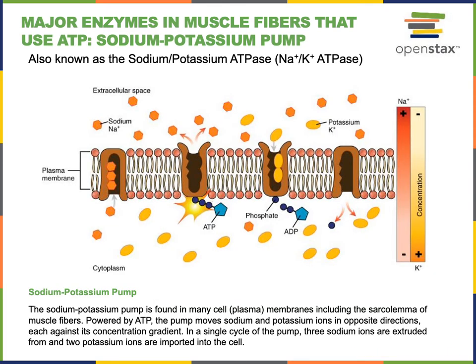The sodium-potassium pump is another enzyme that uses a large amount of ATP in muscle fibers. The sodium-potassium pump performs hydrolysis of ATP and uses the energy released to force sodium out of the cytosol and potassium into the cytosol, creating the concentration gradients necessary for the action potential.